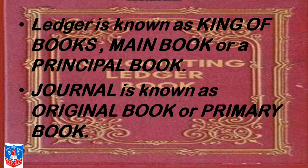Different names are there for ledger, and you may get them in your objective questions, so it is very important from that viewpoint as well. Ledger is known as the king of books; it is also known as the main book or principal book. Likewise, journal is known as the original book or primary book. So your ledger book is known as king of books, main book, or principal book.